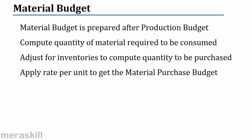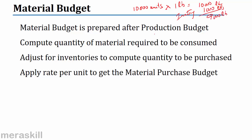We compute the quantity of material required to be consumed. Then we adjust for inventories to compute the material to be purchased. Suppose I need 10,000 pounds of material, but I already have an inventory of 1,000 pounds — then I need to purchase only 9,000 pounds.